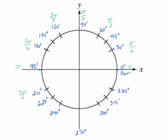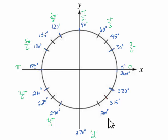240 would be 8 pi over 6, but I'm going to reduce that to 4 pi over 3. And going from 8 pi over 6, this is now 9 pi over 6 at 270 degrees, and 9 pi over 6 reduces to 3 pi over 2. So we're at 9 pi over 6, then 30 degrees more would be 10 pi over 6, and that would reduce to 5 pi over 3.